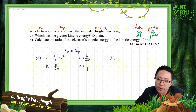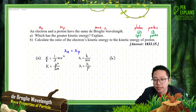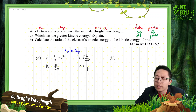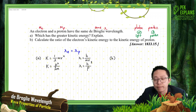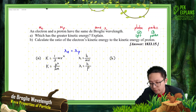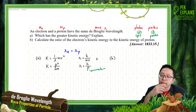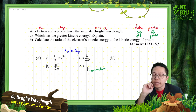First of all, the kinetic energy formula is K equals half mv squared. And for the De Broglie wavelength formula, lambda equals h over mv, or lambda equals h over p, where p is the momentum — that is, mass times velocity.